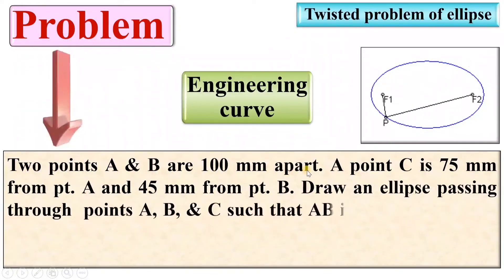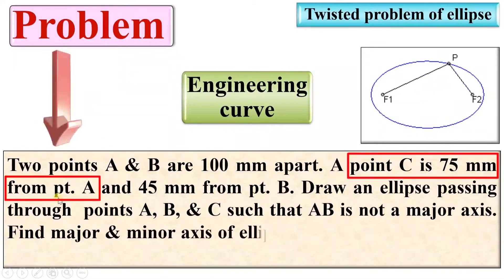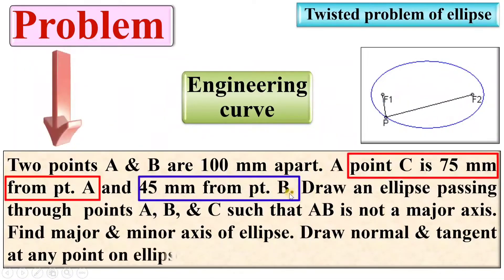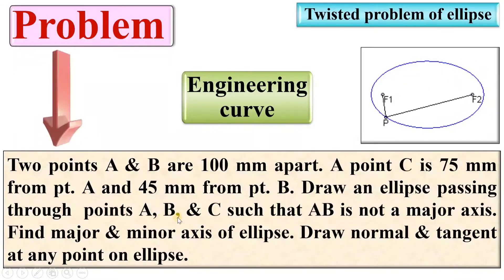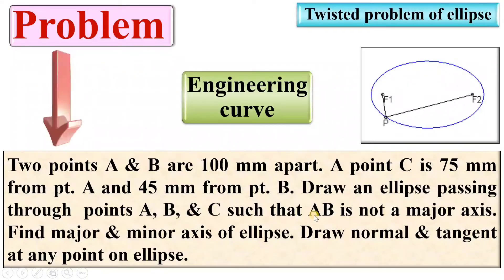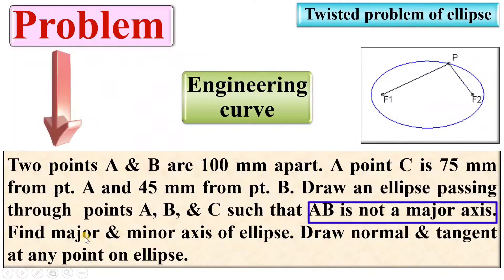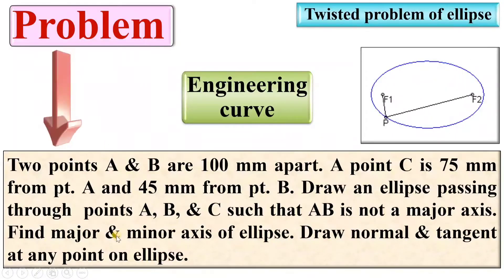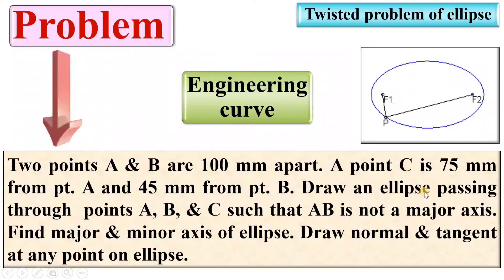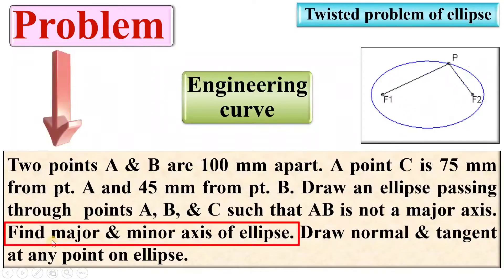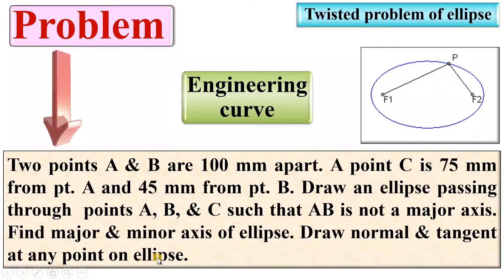Two points A and B are 100 mm apart. A point C is 75 mm from point A and 45 mm from point B. Draw an ellipse passing through the points A, B and C, such that AB is not the major axis. Find the major and minor axis of the ellipse, and draw a normal and tangent at any point on the ellipse. So basically there are three different objectives in this problem.